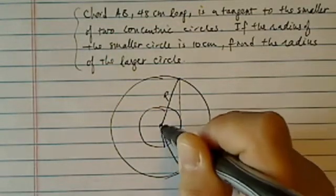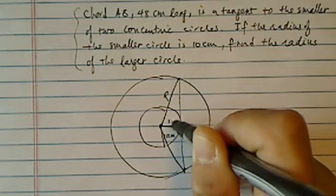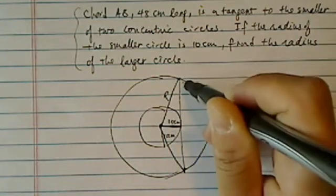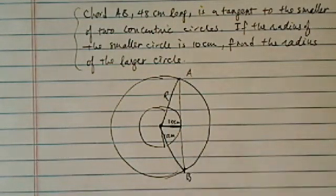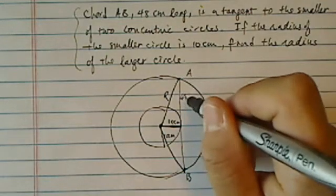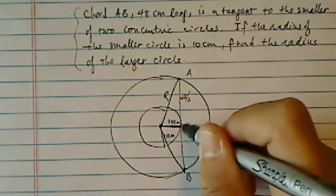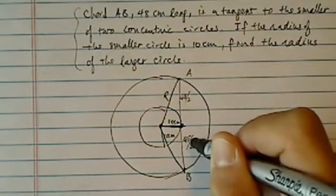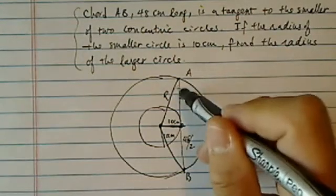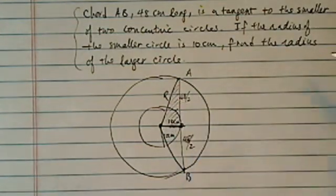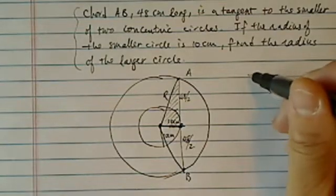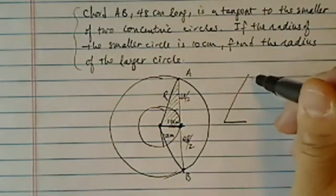So all we really have to do once you draw the circle, it's pretty easy to see. This chord AB given is 48 centimeters long and half of it is 48 over 2. The reason I want to do half is because I'm going to use this right triangle over here. Once you see the right triangle, the rest of the stuff should fall into pieces pretty quickly.